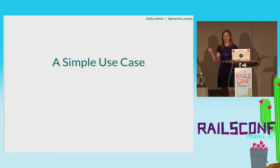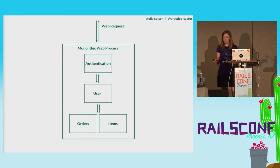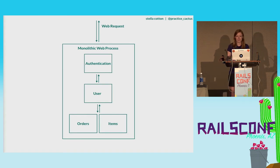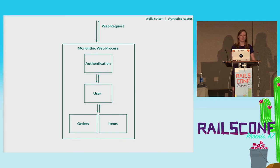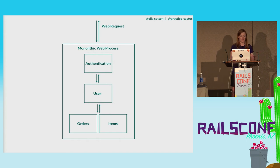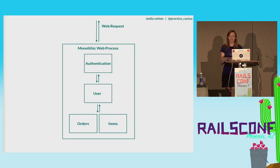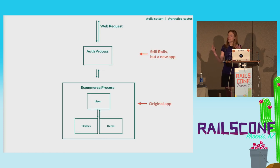A simple use case for distributed tracing: you run an e-commerce site and you want users to be able to see all of their recent orders. Monolithic architecture — you've got one web process or multiple web processes, but they're all running the same kind of code. They return information: users, orders, users have many orders, orders have many items. Very simple Rails app. We authenticate our user, our controller grabs all the orders and items, renders it on a page. Single app, single process.